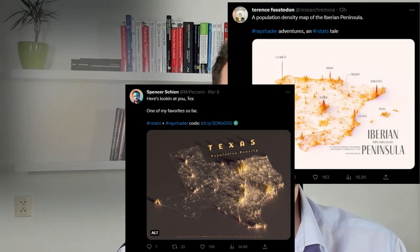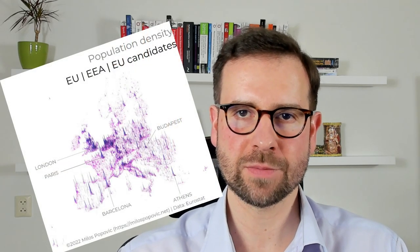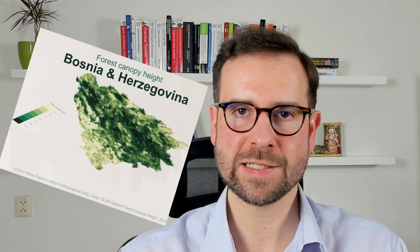Spike maps are pretty popular these days and my Twitter feed is replete with different maps, and I myself was not really immune to this trend. So I created a lot of different maps — population density maps, forest height, elevation maps using spike maps. And thanks to Tyler Morgan-Wall, the creator of the RayShader package, it's really straightforward to make pretty awesome spike maps in R.